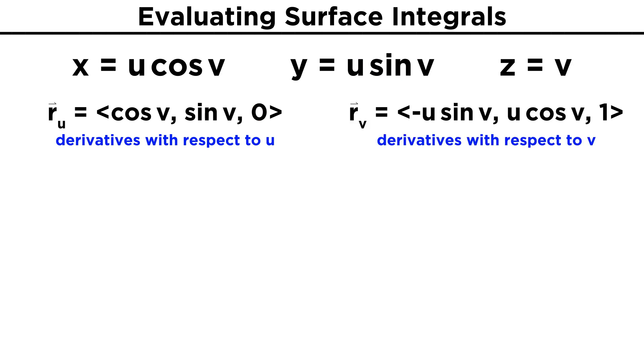Meanwhile, the vector R V will be given by the derivatives with respect to V, leaving us with negative U sine V, U cosine V, and one.